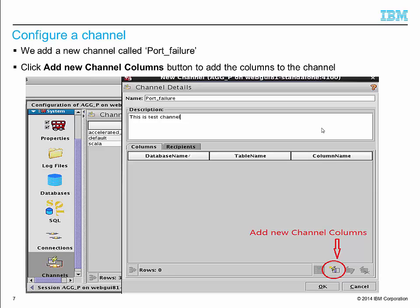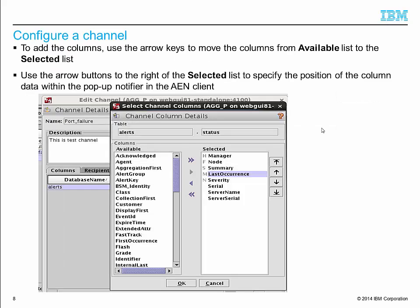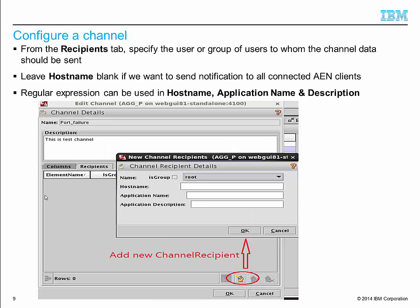Click the add new channel column button to add columns to the channel. To add columns, we select the columns and move them from the available list to the selected list. These are what we've defined. We also need to define which recipients are in the channel. As shown in the screenshot, we send the notifications to those AN clients that are logged in as user route, no matter which host they come from.